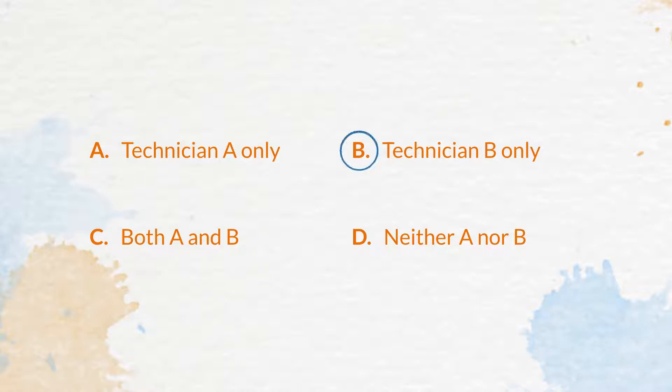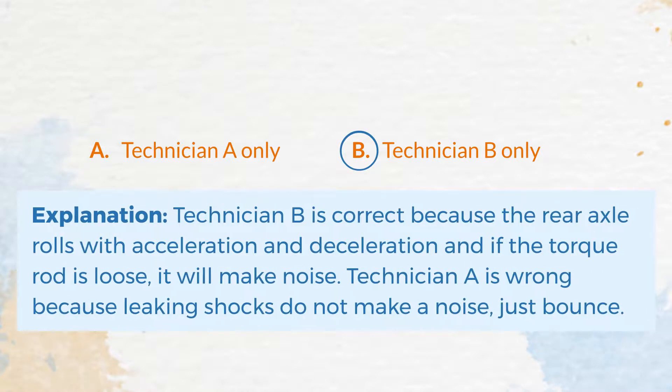The correct answer is B. Technician B only. Explanation: Technician B is correct because the rear axle rolls with acceleration and deceleration, and if the torque rod is loose, it will make noise. Technician A is wrong because leaking shocks do not make a noise, just bounce.